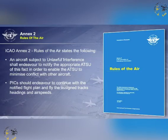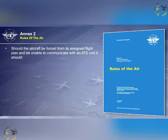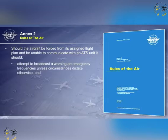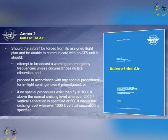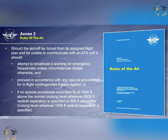Pilots in command should endeavour to continue with the notified flight plan and fly the assigned tracks, headings, and airspeeds. Should the aircraft be forced from its assigned flight plan and be unable to communicate with an air traffic service unit, it should attempt to broadcast a warning on emergency frequencies unless circumstances dictate otherwise, and proceed in accordance with any special procedures for in-flight contingencies. If no special procedures exist, fly at 1000 feet above the normal cruising level wherever 2000 feet vertical separation is specified, or 500 feet above the cruising level wherever 1000 feet vertical separation is specified.